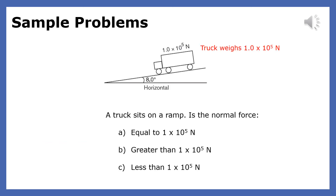A truck sits on a ramp. Is the normal force equal to, greater than, or less than 1×10⁵ Newtons? The answer can't be choice A because the normal force only equals the weight force when the truck is on a horizontal surface. It can't be choice B because when an object is on a ramp, the normal force is always less than the weight force. The answer is choice C.